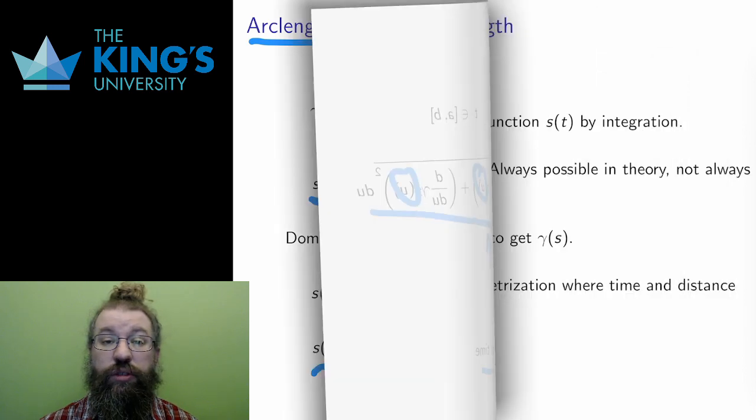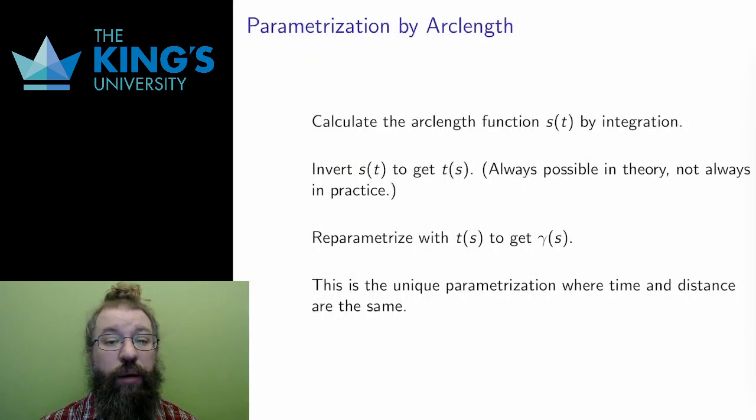Now I have the arc length function. To reparametrize a parametric curve, I need to replace t with some other expression in another variable. The arc length function is S of t. If I invert it, I can get some expression t of s. Then I can replace. This is the algorithm to parametrize by arc length.